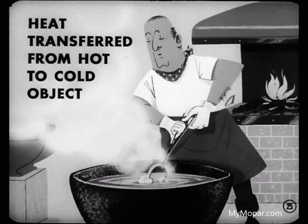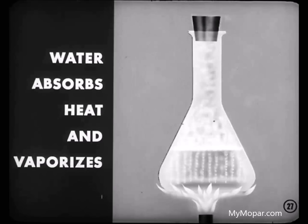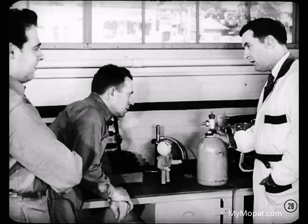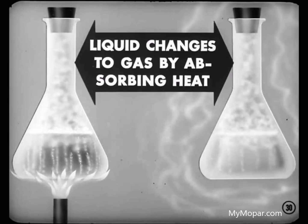But first, we have to accept the fact that heat is always transferred from a hot object to a cooler one. And that's important in refrigeration or air conditioning. Let's suppose that we have two sealed containers — one has water in it, the other has liquid Freon. If we put a flame under the water container, the heat from the flame will be absorbed by the water. When it has absorbed enough heat, the water will vaporize or turn to a gas. Because liquid Freon turns to a gas at a very low temperature, it doesn't need a flame to make this change. Let's assume that the temperature of the air surrounding this Freon container is 70 degrees. This 70-degree temperature is warming up to turn the liquid Freon to a gas. The important point to remember is that in both cases, the liquid is changed to a gas by absorbing heat.